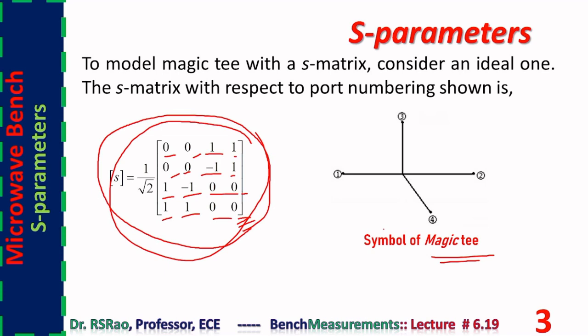The procedure uses a particular port numbering. Ports one and two are the collinear arm ports. Port three is the E-arm port, and port four is the H-arm port.